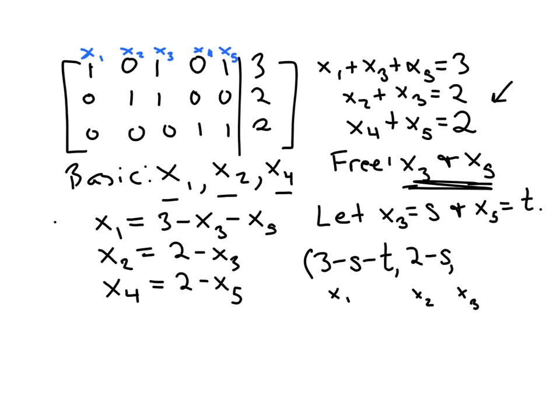x3 is just represented by the parameter s. x4 is equal to 2 minus x5, which is now represented by the parameter t. And x5 is just represented by t.